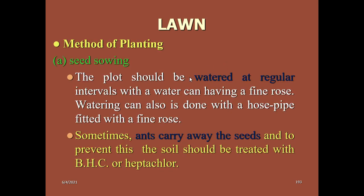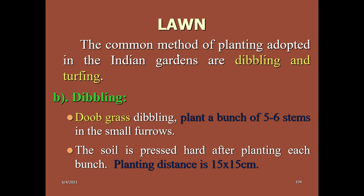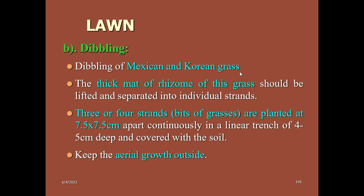After sowing, water regularly. One problem with seed sowing is that ants carry out the seeds, so treat seeds with BHC or heptachlor so that seeds will not be carried by rodents or ants. Another common method of planting in Indian gardens is dibbling — this is the cheapest practice followed in India. Dibbling means planting bunches of five to six stems deep into prepared soil with a plant spacing of 15 × 15 centimeters. Mexican or Korean grasses are generally used in dibbling.